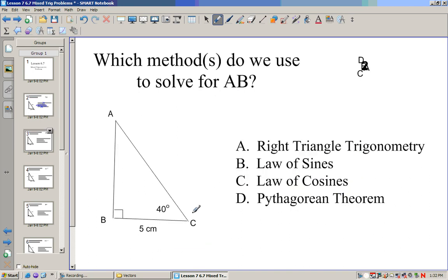In this situation, if we want to solve for AB, we can't use Pythagorean Theorem because that requires us to know two sides. And since it's a 90-degree angle, we'll use right triangle trigonometry.